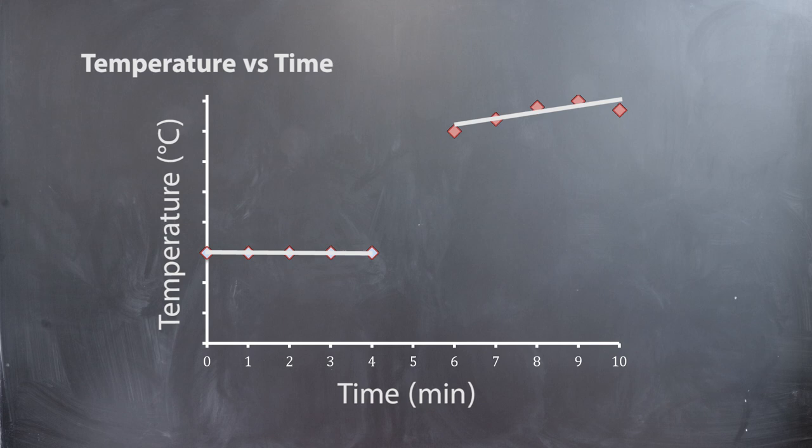Using these lines of best fit, extrapolate your readings from time 0 to 4 minutes to the 5-minute mark to determine t initial.